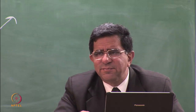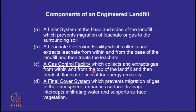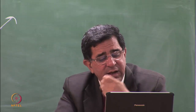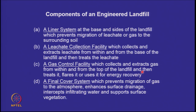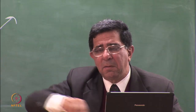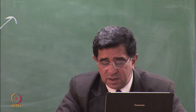Second, a leachate collection facility which collects and extracts the leachate from within and from the base of the landfill, and then treats it — the leachate has to go to a treatment facility. Third, a gas control facility which collects and extracts gas from the top and within the landfill, then treats it. You may flare it — you burn methane and get carbon dioxide, whose greenhouse gas effect is much lower than methane — or use it for energy recovery. You can actually have a waste dump with pipes where gas is collected and a small thermal power plant burns it to generate electricity, as happens in several locations in the US.